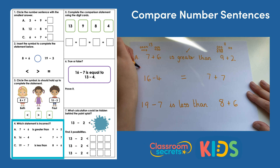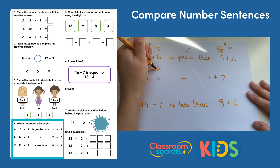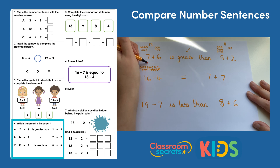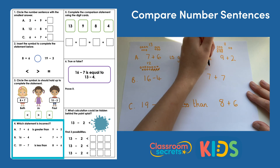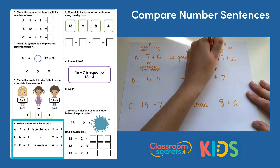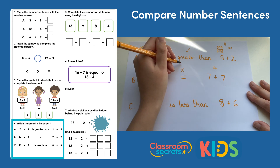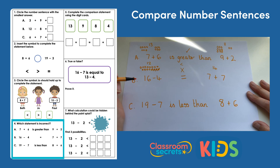Sixteen subtract four is our next one. And we're taking away four. One, two, three, four, five, six, seven, eight, nine, ten, eleven, twelve. And then we've got seven add seven. I know my knowledge of doubles here. I know that seven add seven is fourteen. We've got twelve is equal to fourteen. Well that one's not right because twelve is smaller than fourteen. So we've got B being incorrect so far.